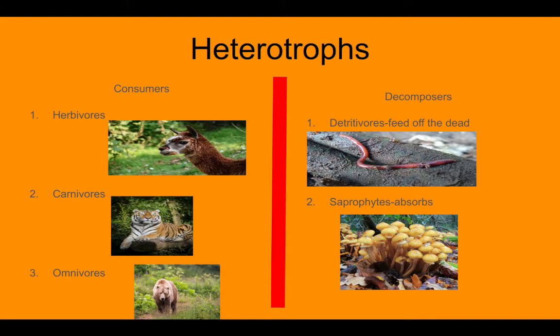And we have saprophytes, which absorb the minerals and nutrients that they need from once expired organisms. Now, this could be anything. It doesn't have to be an animal. It could be dead plants. It could be dead animals. It could be a little bit of both. They actually feed off the nutrients that are left over once something starts to break down and decompose, which means they're very helpful in getting rid of the natural trash that will accumulate.